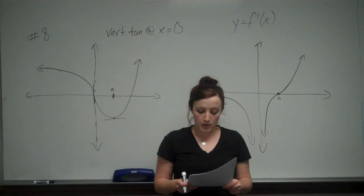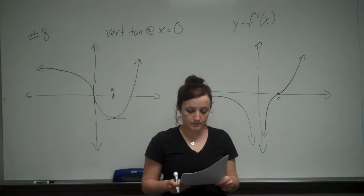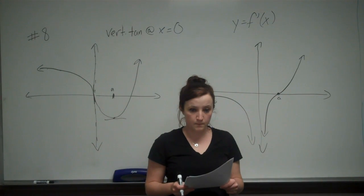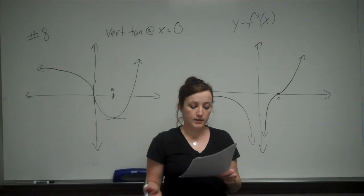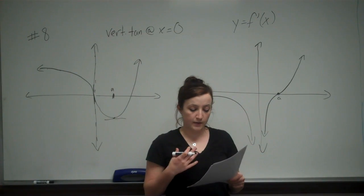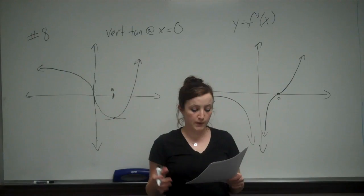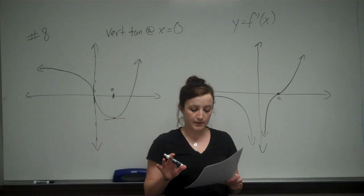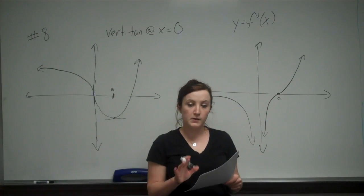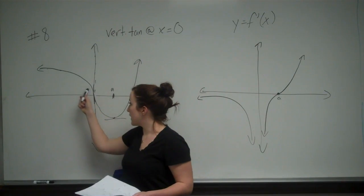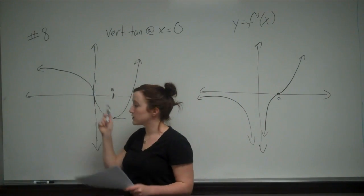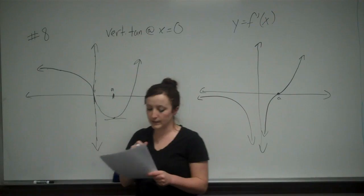At B, again, they have a vertical asymptote at 0, which is good. But on the negative portion of the graph, the negative x values, we've got positive values. And as you can see from our original graph, all those values of x, all the negative values have negative slopes. So that's why B is incorrect.